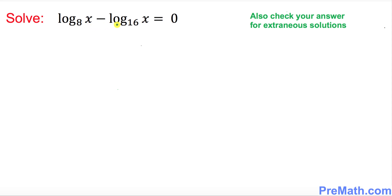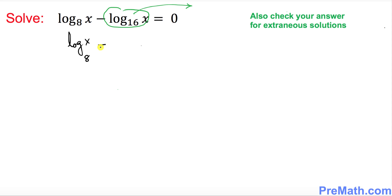Let's make this problem a little bit simpler by moving this part of the log to the right hand side. We will end up with log of x with base 8 on the left and on the right hand side this negative part becomes positive: log of x with base 16.